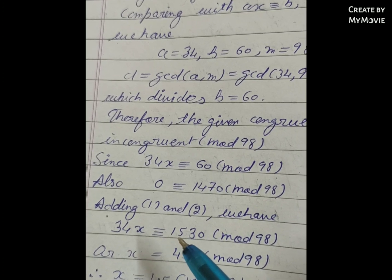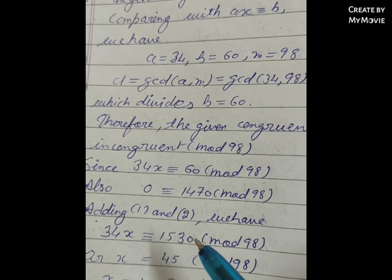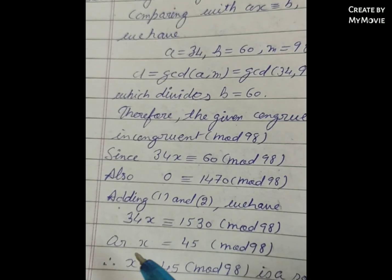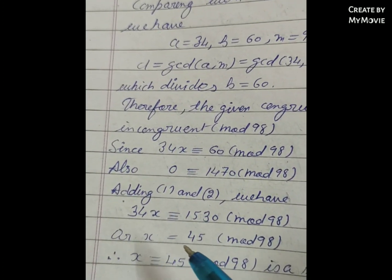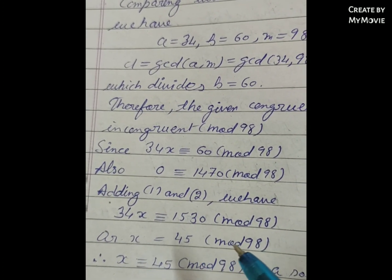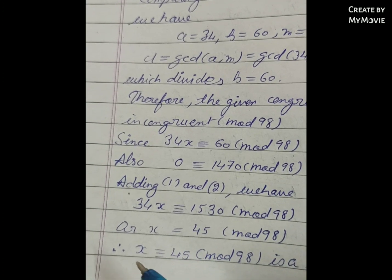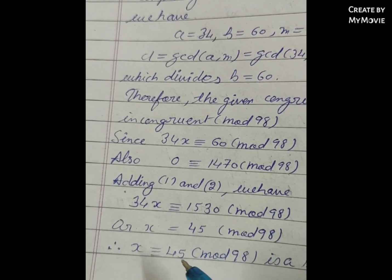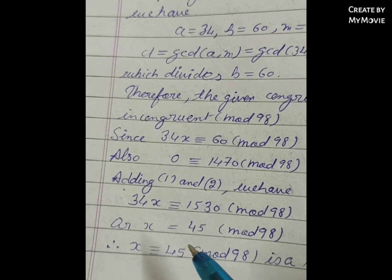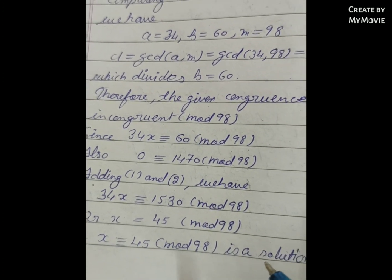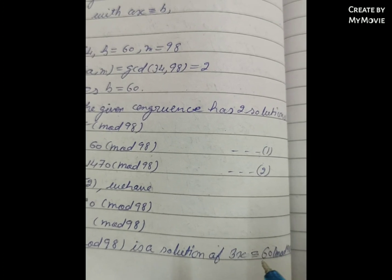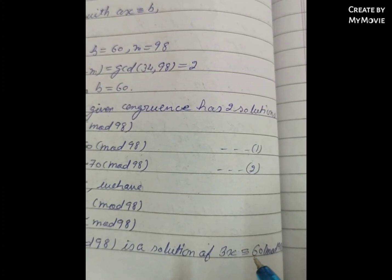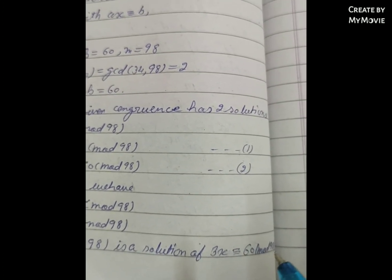Also, 0 ≡ 1470 (mod 98), this is equation 2. Adding equations 1 and 2, we have 34x ≡ 1513 (mod 98), or x ≡ 45 (mod 98). So x ≡ 45 (mod 98) is a solution of 34x ≡ 60 (mod 98).